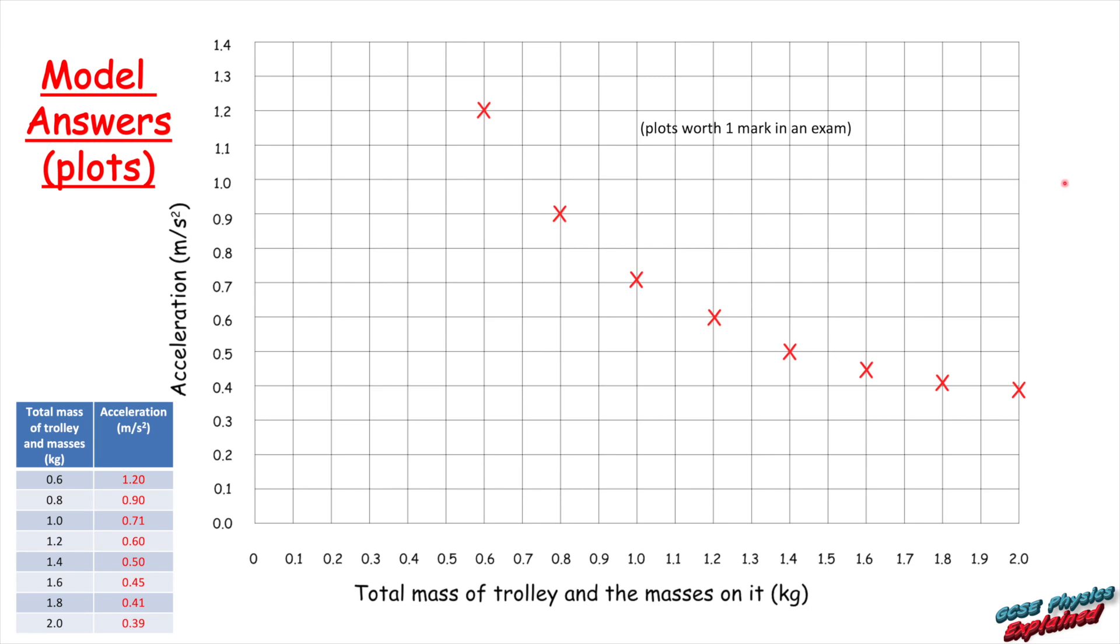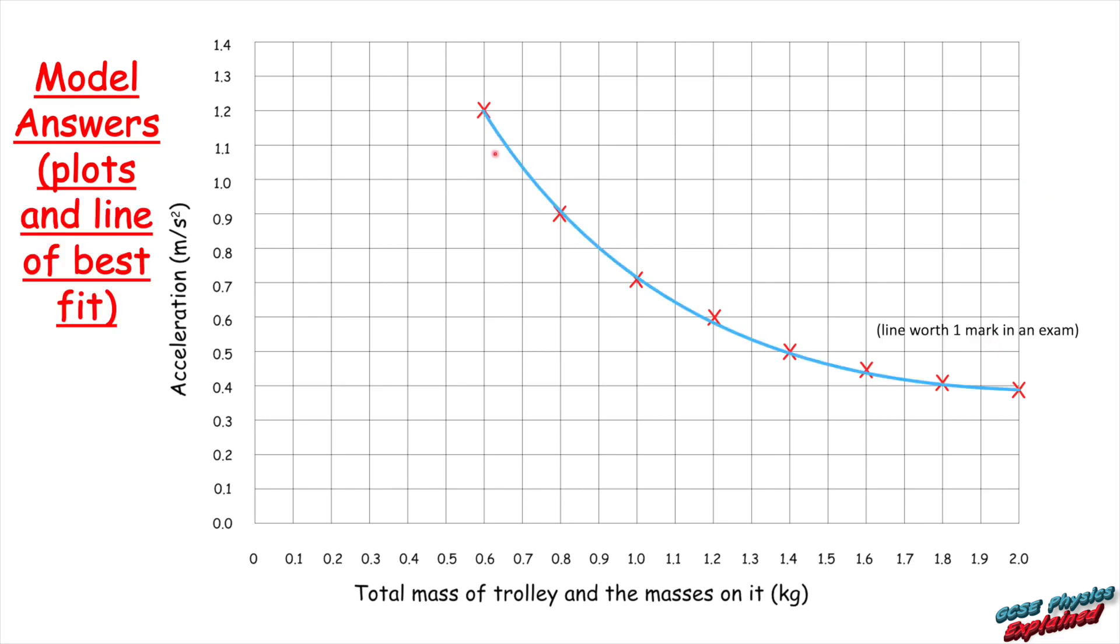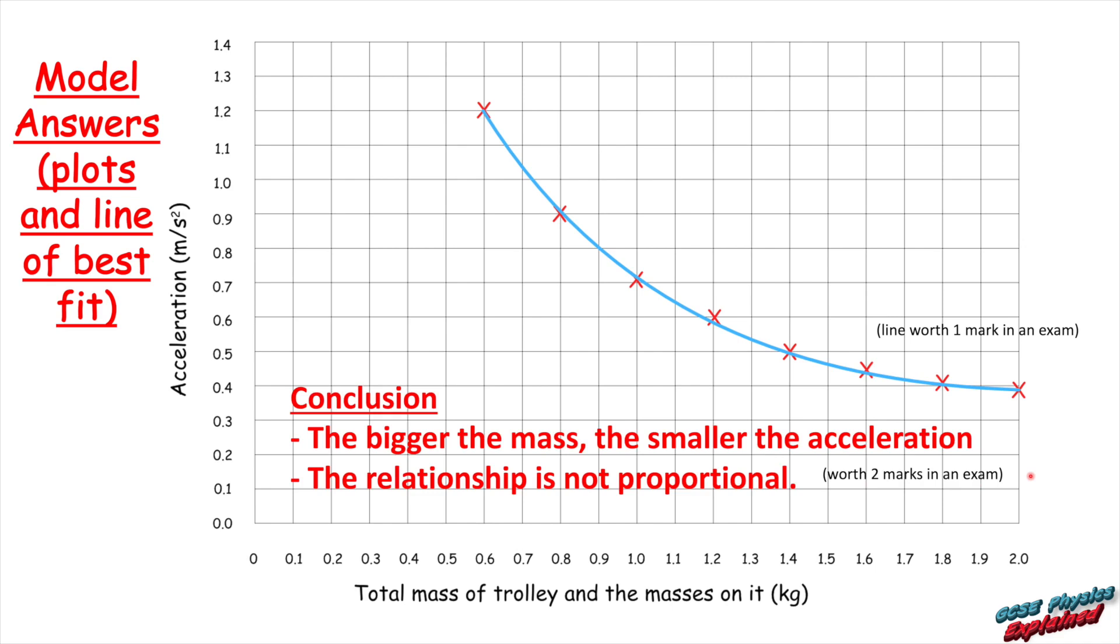You'll get one mark in an exam for being able to plot your results correctly. Then you'll get another mark in an exam for being able to draw a line of best fit. Now, a line of best fit does not mean a straight line of best fit. It can be a curve as it is in this instance. And you'll get a couple of marks for being able to come up with a conclusion. So as you can see here, the bigger the mass, the smaller the acceleration. Small mass here, you get a big acceleration. And as the mass got bigger and bigger and bigger, the acceleration got smaller and smaller and smaller. That's what you would expect. However, it's important to note that the relationship is not proportional. We know that because it's a curve instead of a straight line. And there we go.